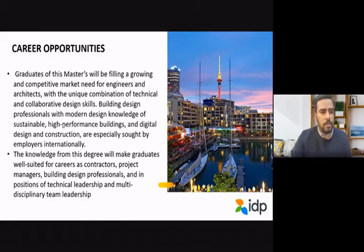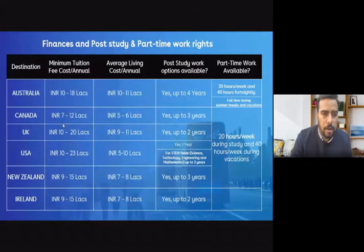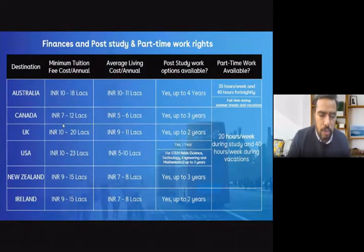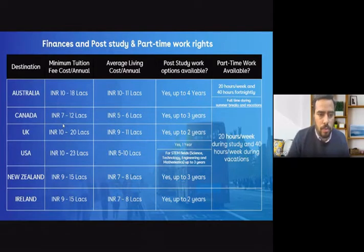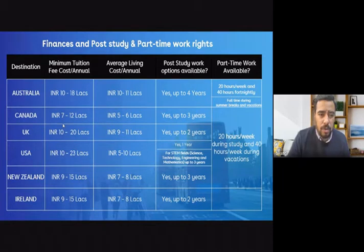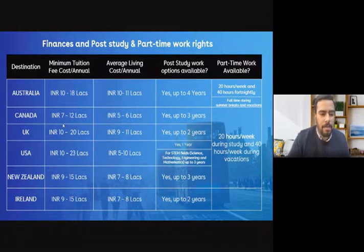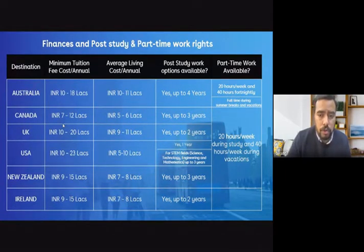Career opportunities in architecture in New Zealand are massive. In terms of tuition fees for those planning to study abroad, here is an approximate guide per annum: Australia is around INR 10 to 18 lakh, Canada is one of the most economical, UK is about INR 10 to 20 lakh, US is INR 10 to 23 lakh, and New Zealand is about INR 9 to 15 lakh. Because of COVID-19, many universities are offering scholarships, so ensure you gather as much information about scholarship opportunities available.